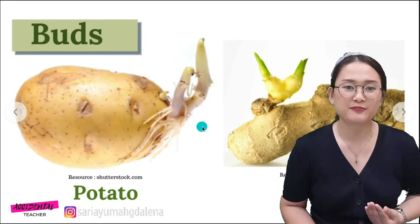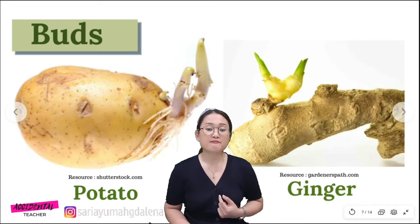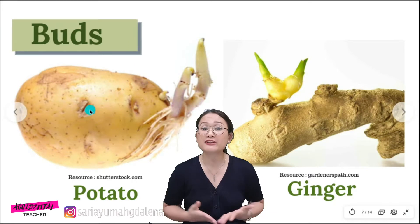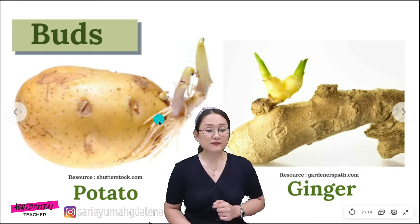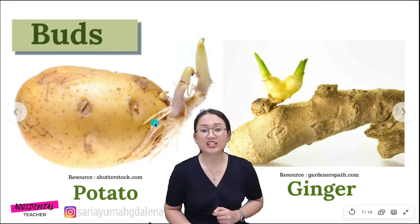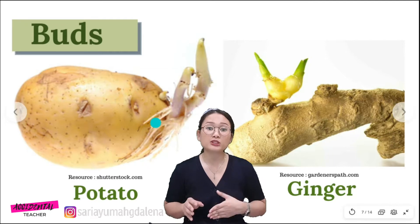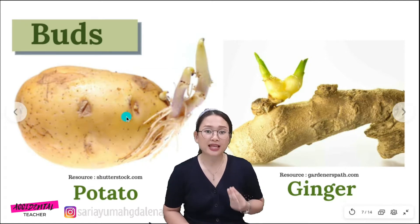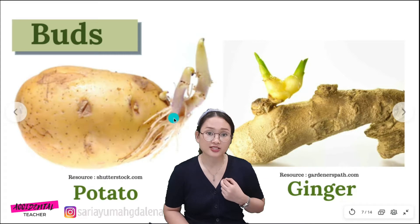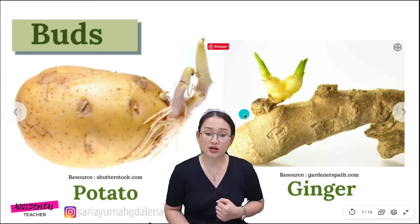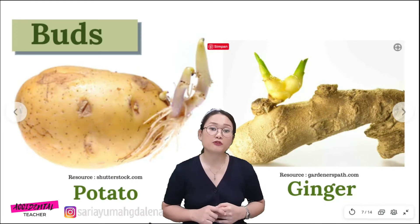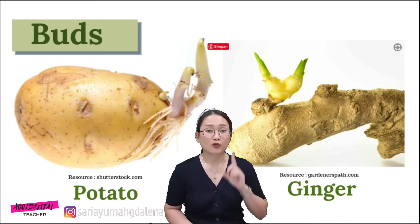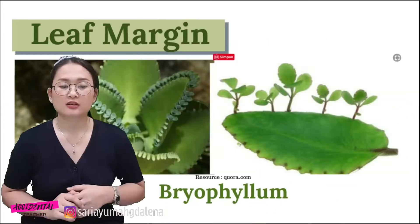Next we have buds. You are probably already familiar with these two plants. The first one is potato — those black dots on the potato are actually the buds. If you put the potato in the soil, a new plant will grow from those parts. Similarly with ginger — you can see the buds on the ginger, and a new plant will grow from the buds of the ginger if you plant it.